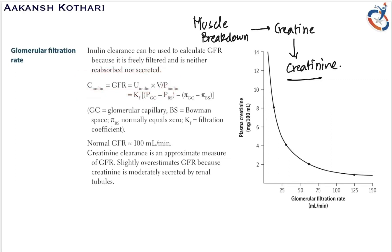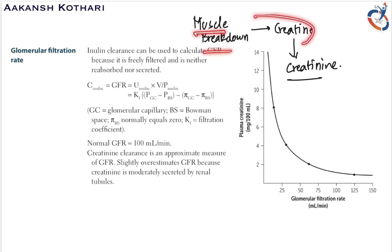The second substance is creatinine. Creatinine is produced from creatine, which is produced by muscle breakdown. Creatinine clearance is an approximate measure of GFR because creatinine is not reabsorbed but is moderately secreted by the renal tubules. Therefore, creatinine clearance can slightly overestimate or show a higher value than the actual GFR due to this small tubular secretion.